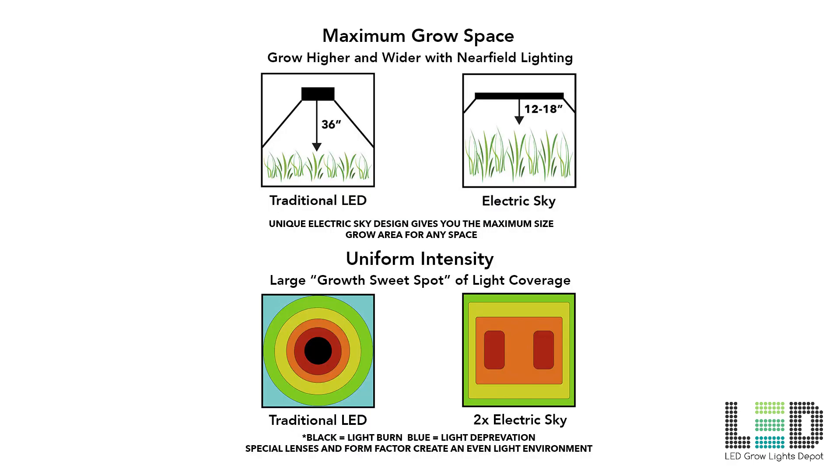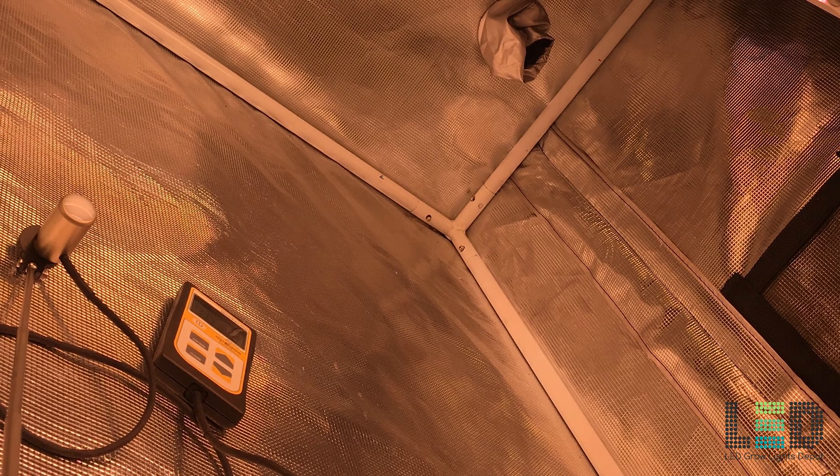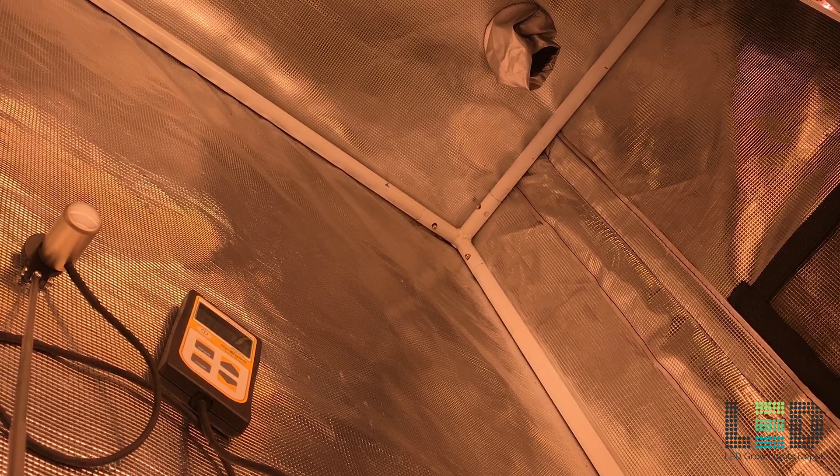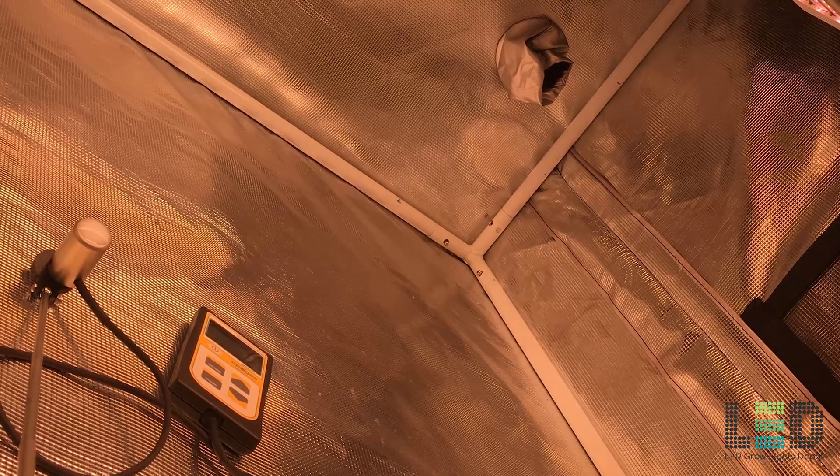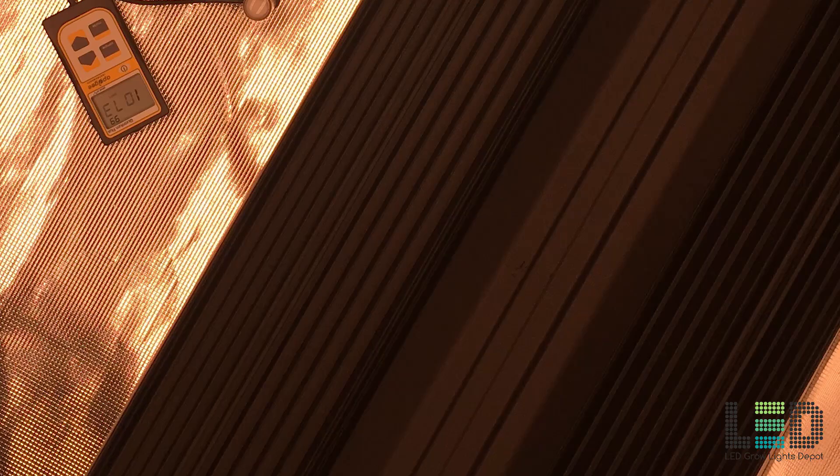At full intensity, the recommended hanging distance for veg is around 24 inches to 36 inches from the canopy and about 18 inches for flowering for most growers. Now let's look at my PPFD readings for the ES180. As a note, you're going to see higher PAR readings in a tent or with an array of fixtures in an open area versus a single light in an open area.